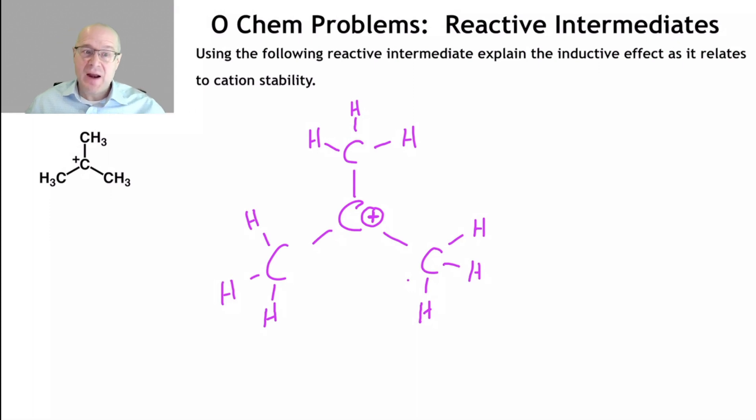Cations are smaller than anions. Cations are smaller than anions, in general. So this carbon cation has an atomic radius that is smaller than its neutral counterparts. Therefore, this carbon atom in the center is more electronegative. It has more affinity for the bond electrons than the neutral carbons do.